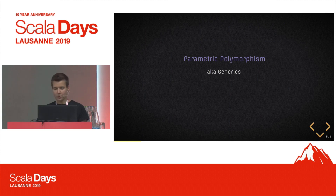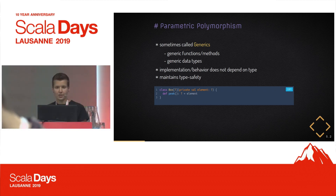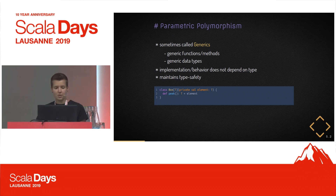Let's start with the first type of polymorphism, which is parametric polymorphism. Some of you might also know it as generics from Java. In this case, we can have either a generic function, method, or a generic data type. The implementation does not depend on the type we provide. Looking at the example at the bottom, we have a box — a generic data type — and we don't really care what kind of type we put into the box, but we do care that when we peek at the element inside, we see the same type we put in.